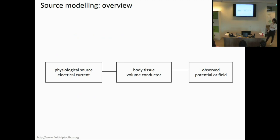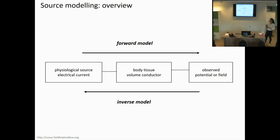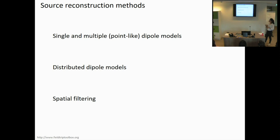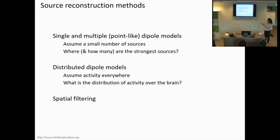You've heard from Simon yesterday how to compute a good forward model that basically defines how our electrophysiological source projects to the channels given the volume conduction properties of your head. Now we're going to do the inverse problem — specifically, we're going to zoom in on the beamforming approach. You've heard that we can do single dipole fitting, for example, where you only assume one or a couple of sources and try to find a model that best fits your data.